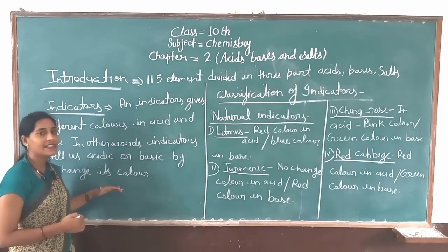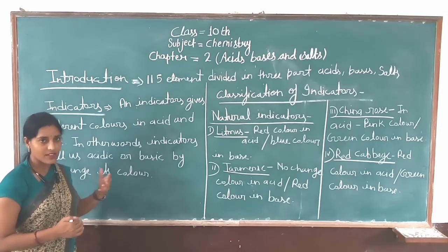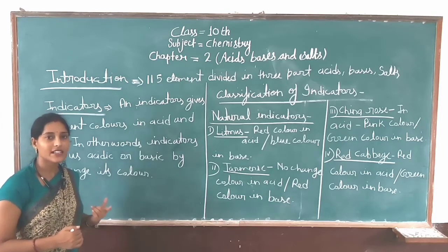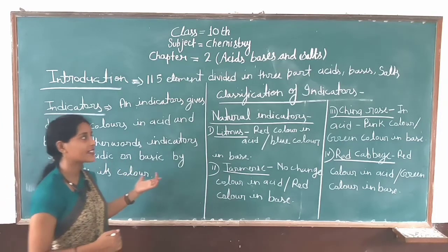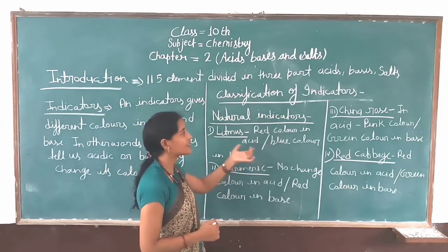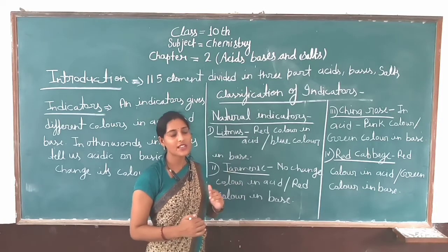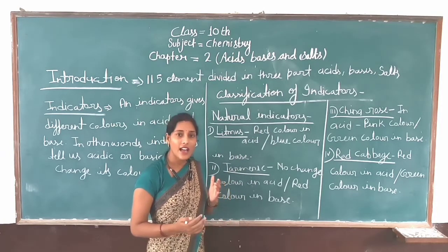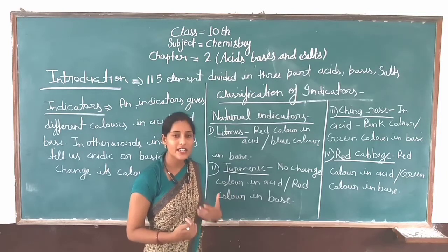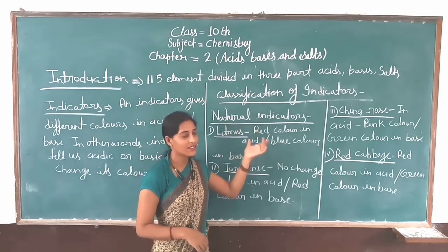Now, indicators are classified into a number of types — this is not just one indicator, there are many indicators. Our classification of an indicator is as follows. First of all, our natural indicator. So we can say that a natural indicator is one that we have obtained naturally — we have found it in nature. So how do we indicate using this? It is called a natural indicator.